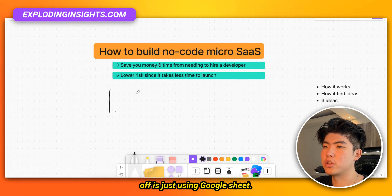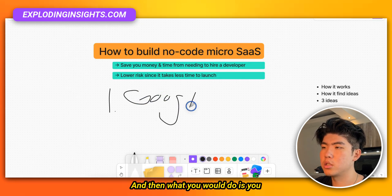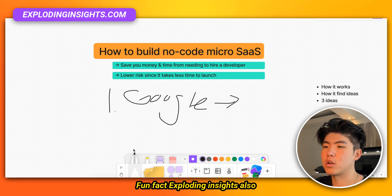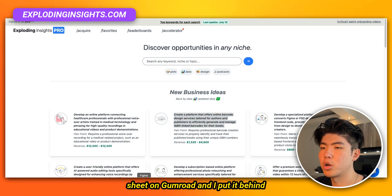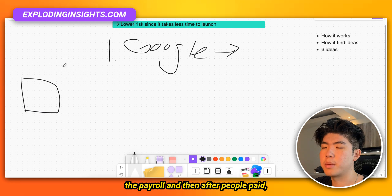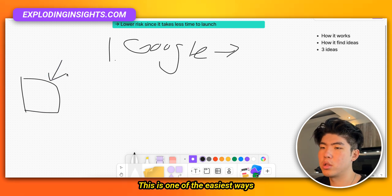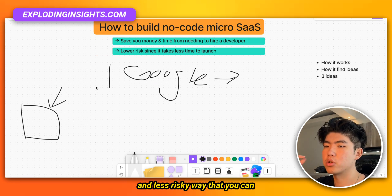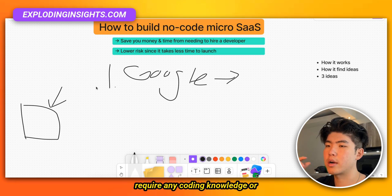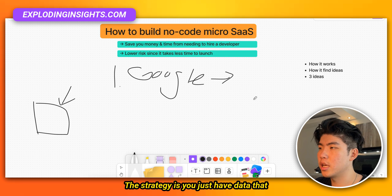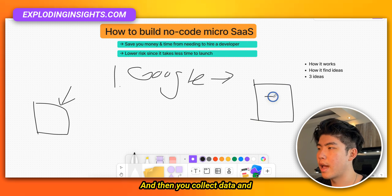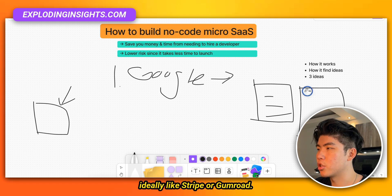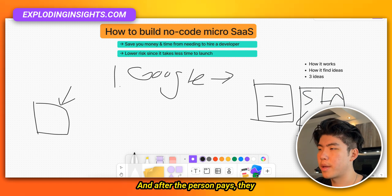The easiest way to start is just using a Google Sheet, and then you monetize it. Exploding Insights also started off with just a Google Sheet — I listed it on Gumroad and put it behind a paywall, and after people paid they got access to the Google Sheet. This is one of the easiest and least risky ways to start a micro SaaS. It doesn't require any coding knowledge or advanced knowledge of how to set up auth or payments. The strategy: have data that is valuable to a certain group of people, collect it, put it behind a paywall like Stripe or Gumroad, and after the person pays they get access to the database.